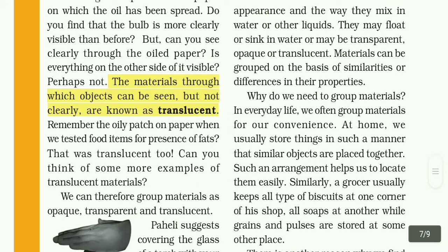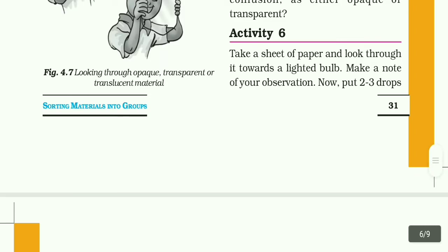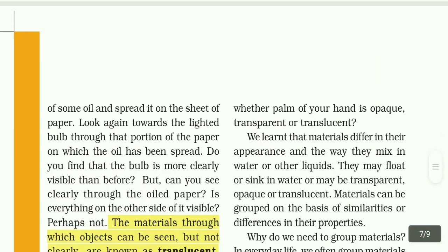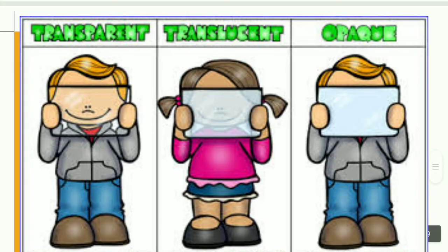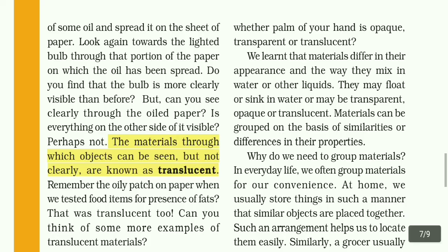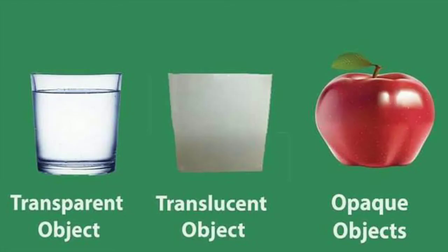The next one is translucent. The material through which objects can be seen but not clearly is known as translucent. Transparent means you can see clearly; opaque means you cannot see at all; translucent means you can see through but not clearly.